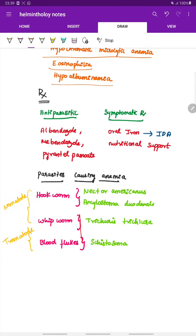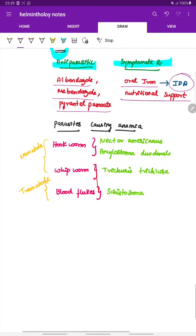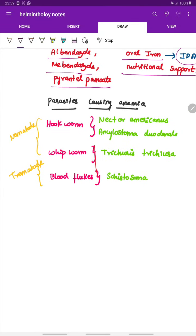Lastly coming to the treatment. The treatment is either by giving anti-parasitic drugs and also by symptomatic treatment. The anti-parasitic drugs include albendazole, mebendazole, and pyrantel pamoate. For symptomatic treatment, oral iron is given to treat iron deficiency anemia, and also nutritional support is given.